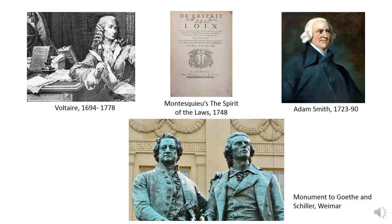The French Encyclopédie, published between 1751 and 1785, was one of the most influential publications of the period, and its English-language counterpart, the Encyclopedia Britannica, published between 1768 and 1771, is likely still familiar to English speakers today.